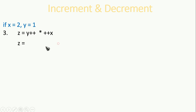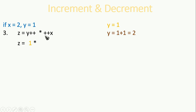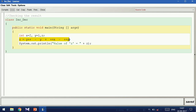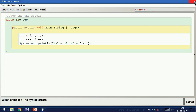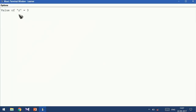The third sum: z is equal to y++ * ++x. Here y++ is post-increment; y's value is 1, so 1 is substituted and then y increments to 2 for next time. Now ++x: x is equal to 2, pre-increment makes it 3. So 1 * 3 = 3. Let us verify this through a program — paste the sum, compile, and run. We get 3.